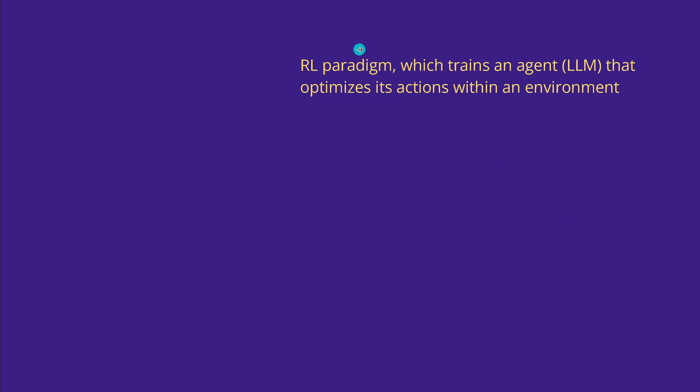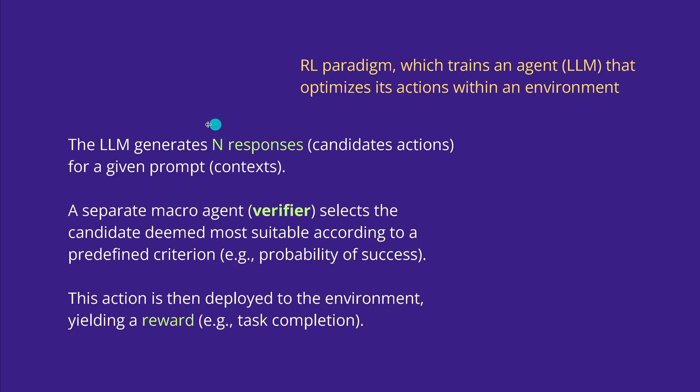If you're new, the reinforcement learning paradigm is simple. It trains an agent, let's say a large language model, that optimizes its specific action, think about a robotic action, within a specific environment. So the LLM generates N responses, those are candidate actions for any given prompt.